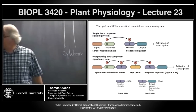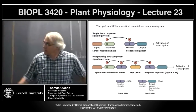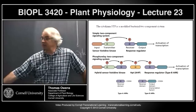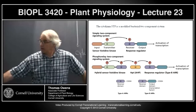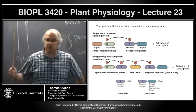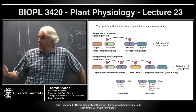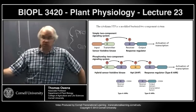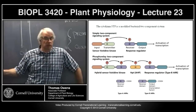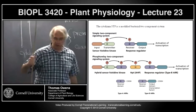The response regulator proteins, called ARRs, have two different types of structures in plants. Both have the receiver domain that gets phosphorylated from the signal transduction pathway. But only some of them — type B ARRs — have the output domain, specifically a transcription factor that binds to DNA. The other type A ARRs lack that binding domain.